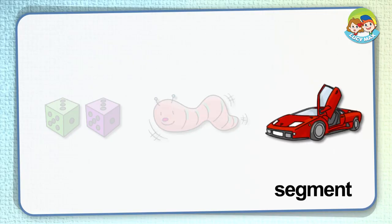Segment: a segment of something is one part of it. In the picture, a door of the car is opened. A door is a segment of the car. Other parts, such as windows and wheels, are segments of the car, too.